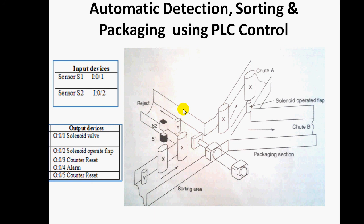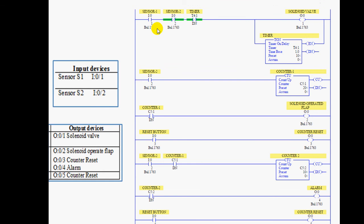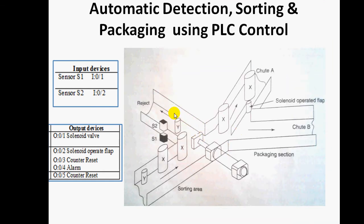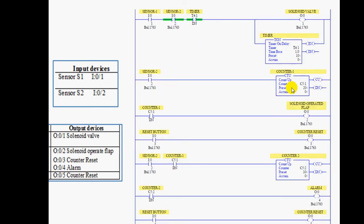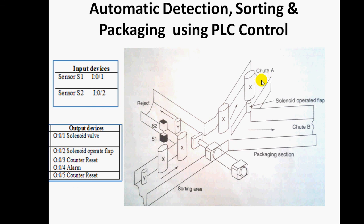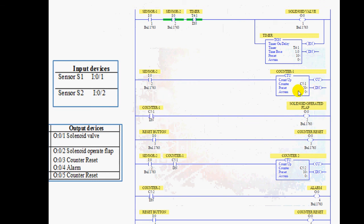In the ladder diagram, when sensor one is actuated, solenoid valve one is actuated so the Y component goes to the rejection side. When sensor two is actuated, the X component moves to chute A and counting takes place. After counting 20, the counting-done bit activates the solenoid-operated flap for packaging purposes — 10 counts per chute. After completion of 20, the solenoid-operated flap turns on and the reference is used for reset.